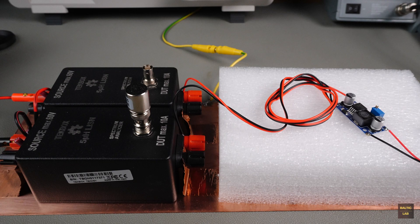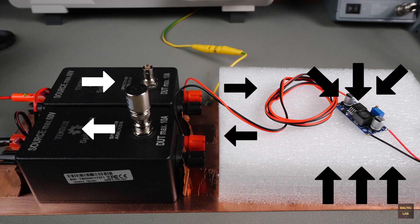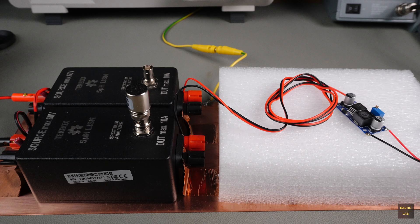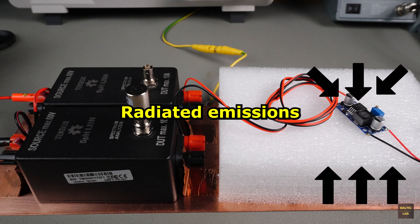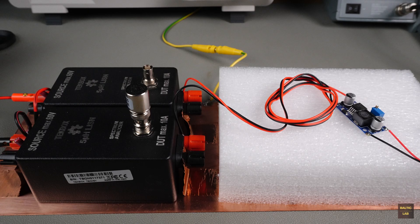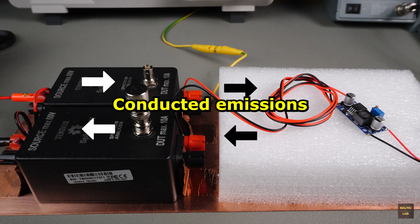Before I go into detail about the test setup, here's a quick explanation of what the measurements refer to. In general, we distinguish between two types of emissions, conducted and radiated. Radiated emissions are interference signals emitted by the device via electric or magnetic fields. Conducted emissions, which we'll focus on here, are transmitted directly through the power or signal lines.